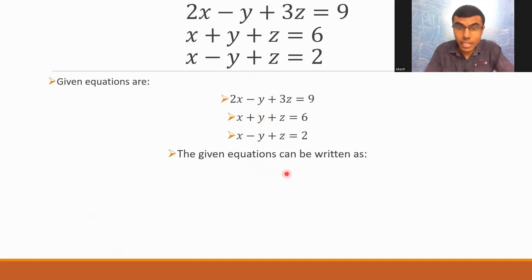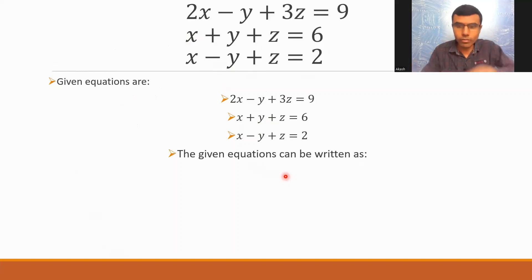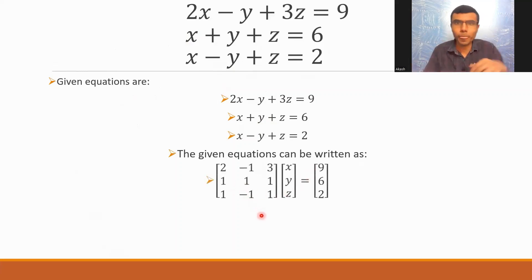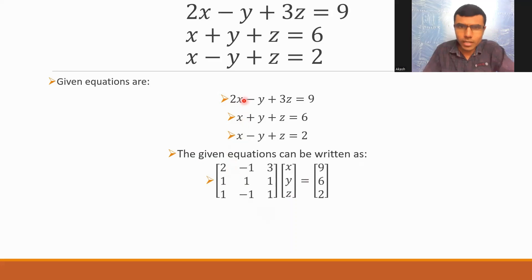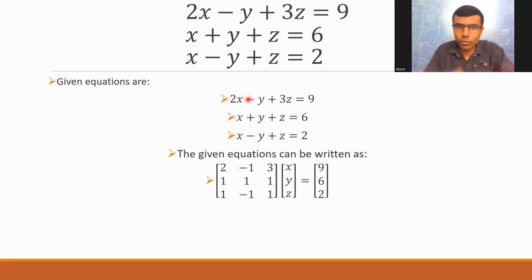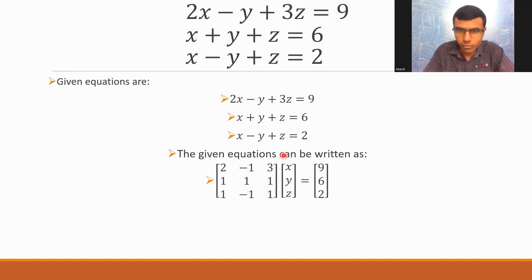This given set of equations can be written in matrix form like this. I've written only the coefficients: 2, minus 1, 3 for the first row; 1, 1, 1 for the second row; and 1, minus 1, 1 for the third row. On the right side, I have 9, 6, 2.